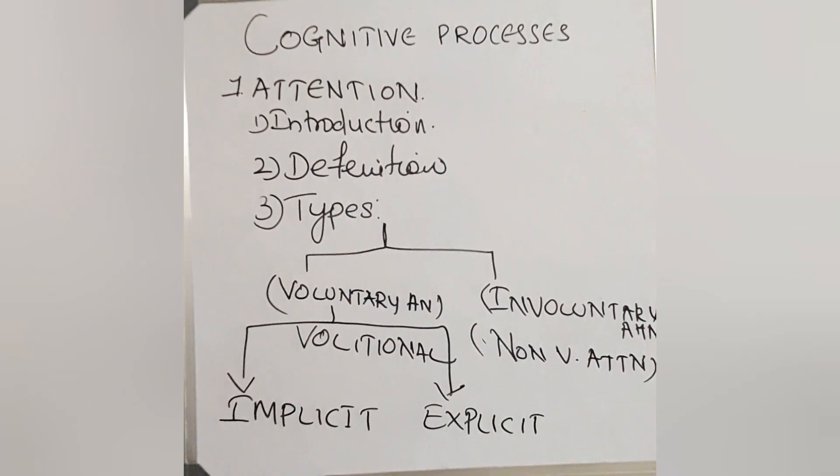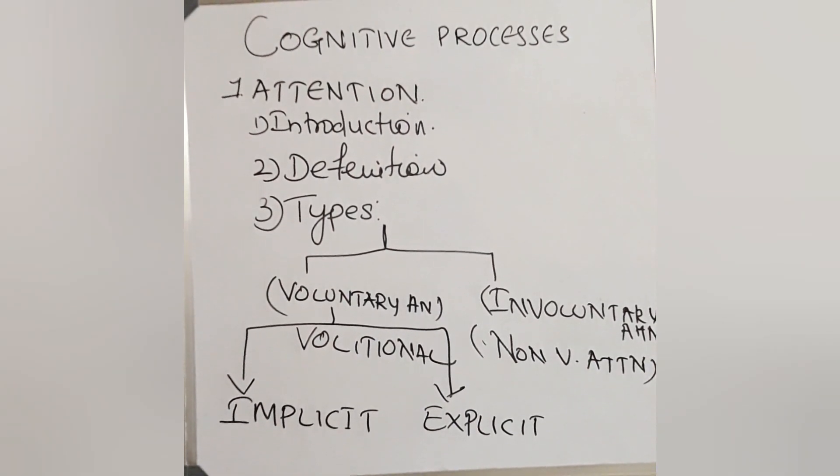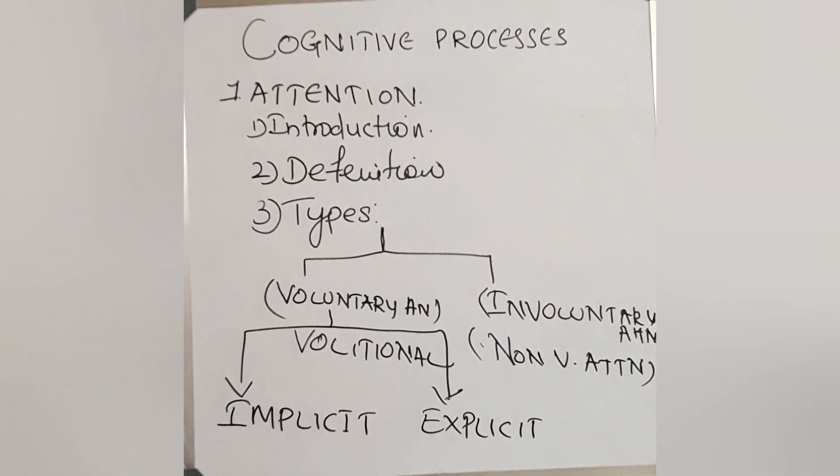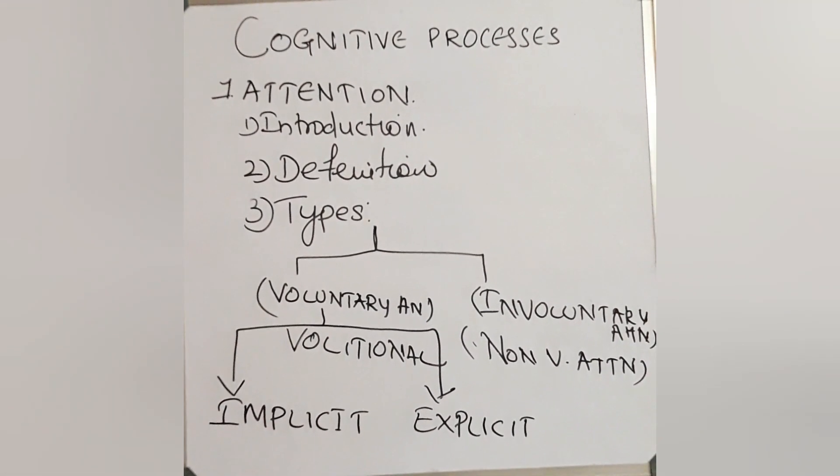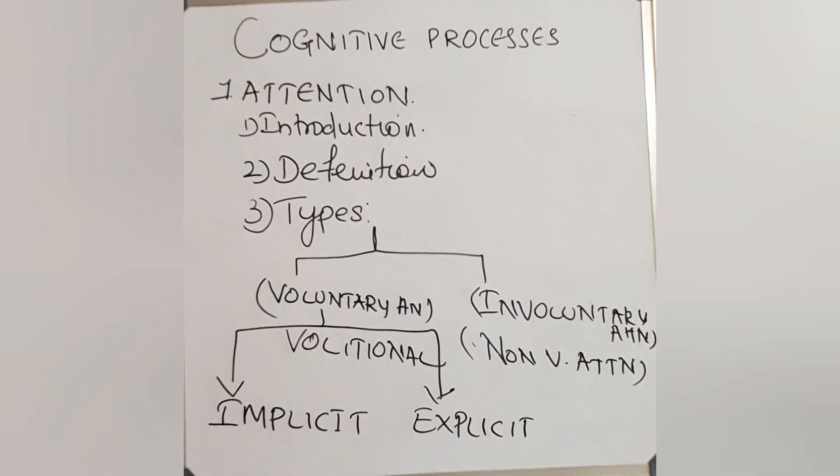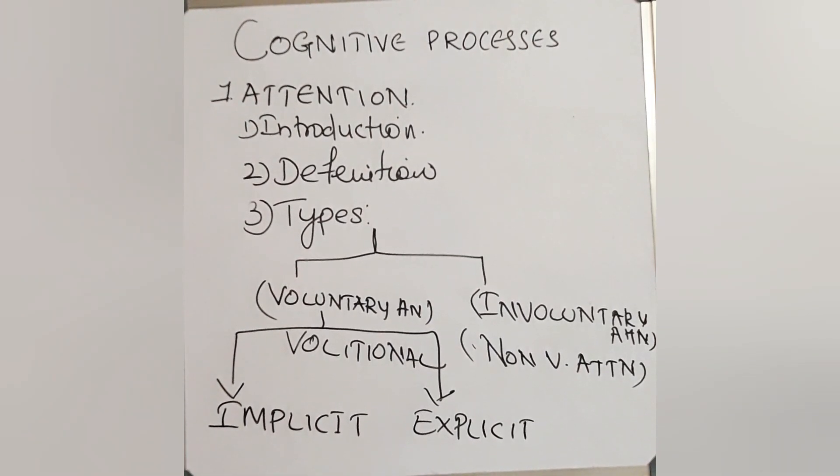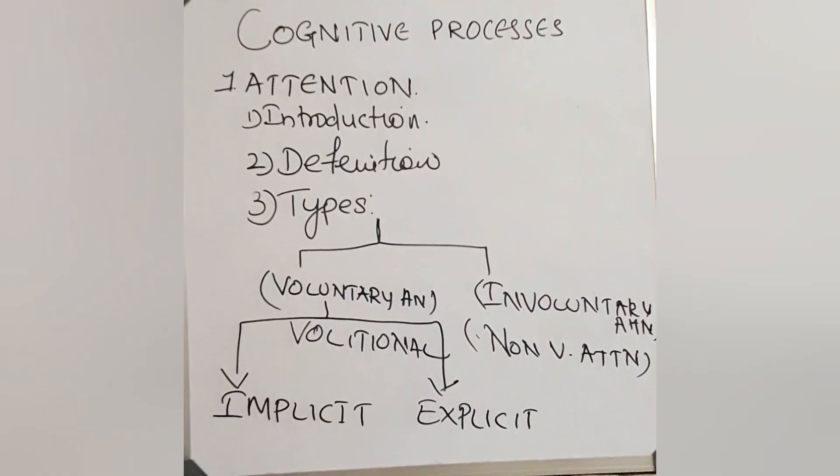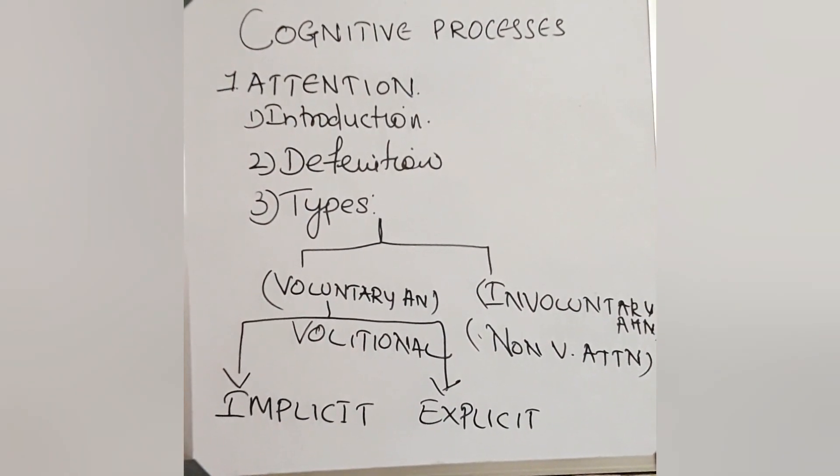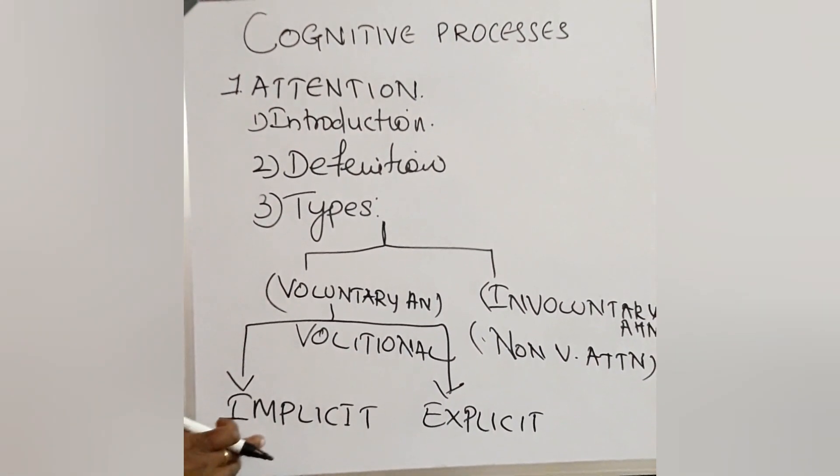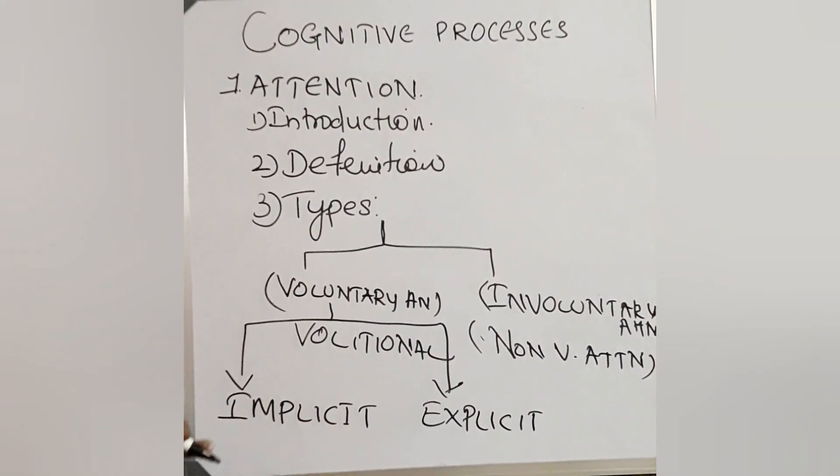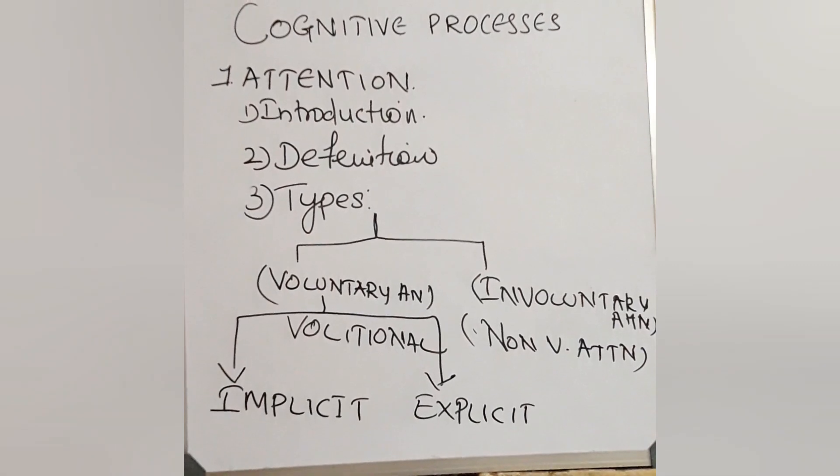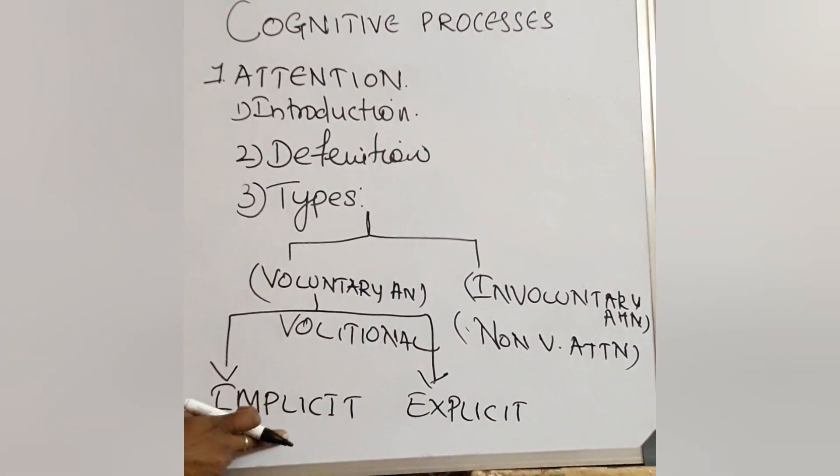For an example, the teacher is giving a homework. She is asking, if you are not finishing tomorrow, I will give a punishment. What we will think, we should not get the punishment. Only because of fear, we will finish that homework and we will go to the school or colleges. That is called implicit attention. We are giving the attention to avoid the punishment. So it is implicit attention.